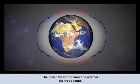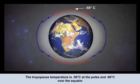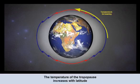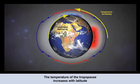If we know that temperature decreases with height, then it follows that the closer the tropopause is to the Earth, the warmer it will be. Over the poles, the tropopause temperature is about minus 50 degrees Celsius, and over the equator it's minus 80 degrees Celsius. As we can see, at the tropopause, temperature increases with latitude — the opposite of what happens at the surface, where temperature decreases with latitude.